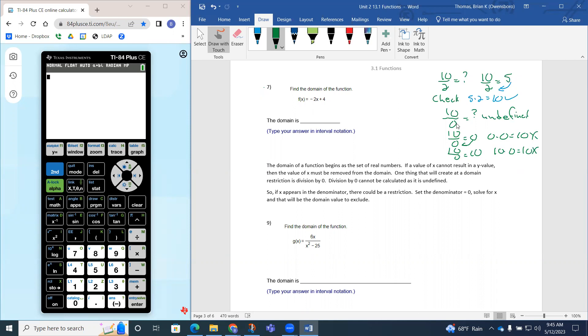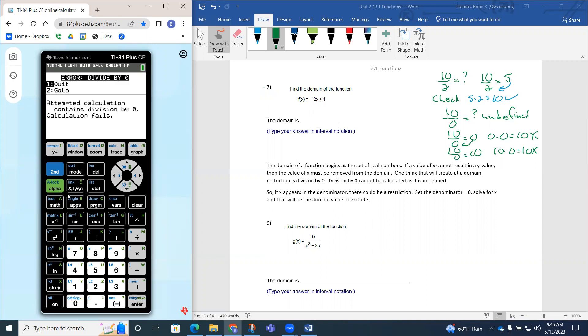So if the 0 is in the denominator, that's what we call division by 0, and division by 0 makes no sense. It's described at this point as undefined. So if you do that into a calculator, if you divide 10 divided by 0 into your calculator, notice that it says there's an error. Attempted calculation contains division by 0. Calculation fails. Notice that when I do my calculations, I do not get a y value, so it crashes.